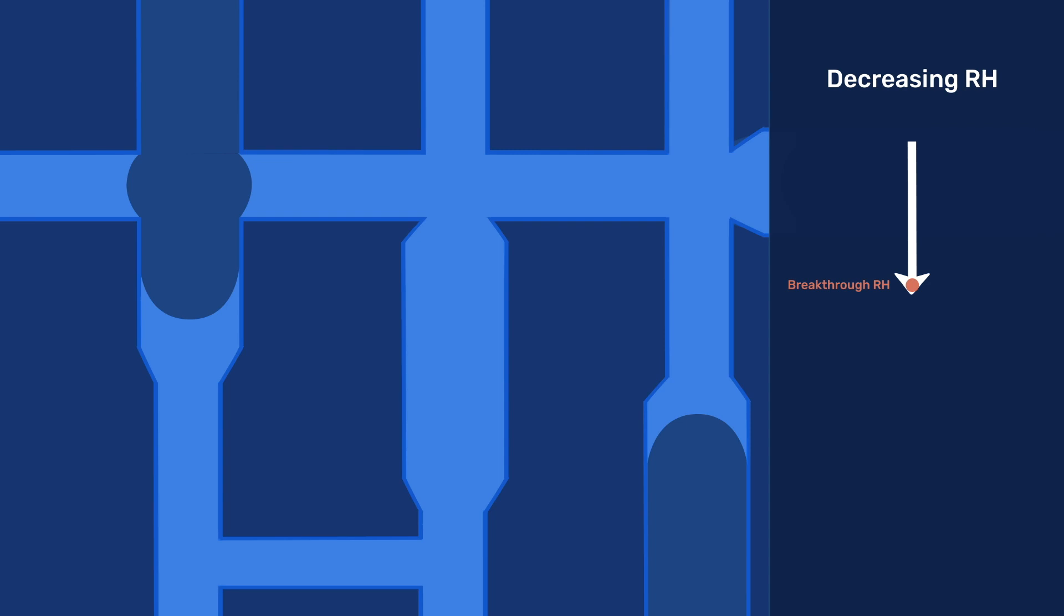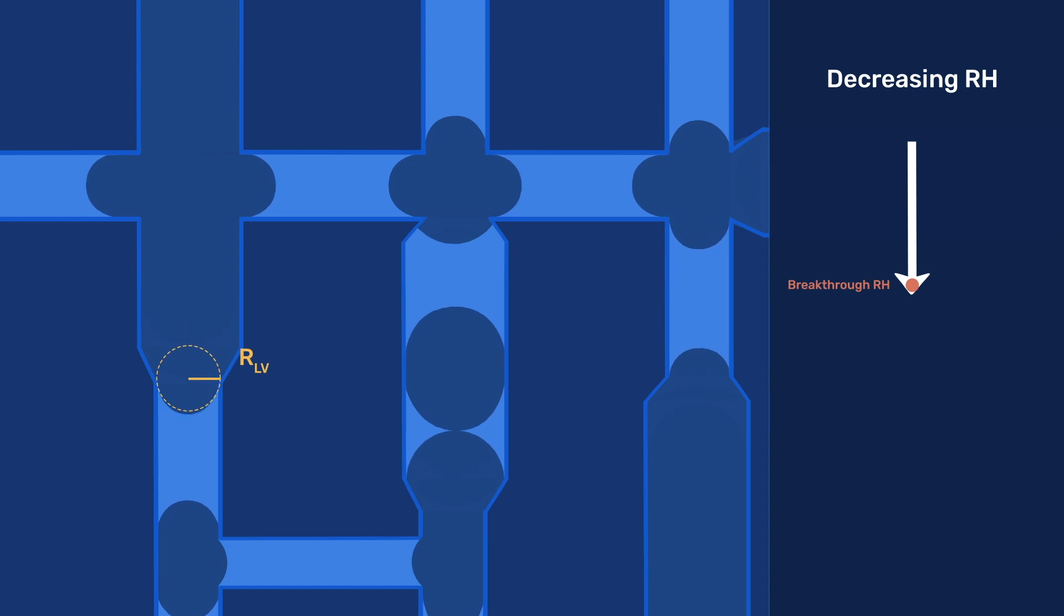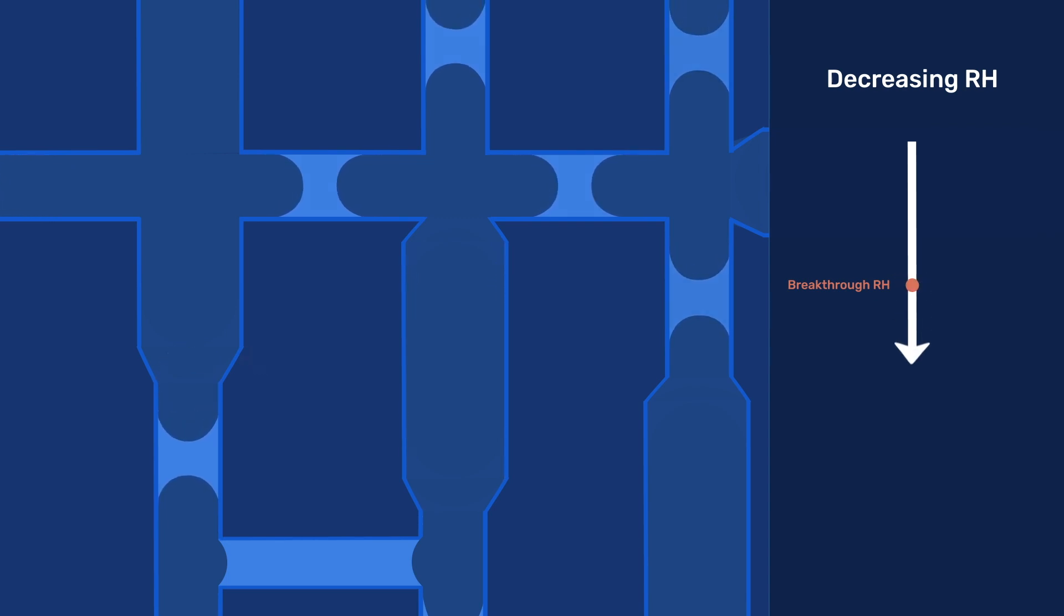At or below that breakthrough value of relative humidity, the menisci can pass through small enough pores to allow vapor to penetrate throughout the body. However, even at that point, smaller pores may remain full of water until the relative humidity drops even further.